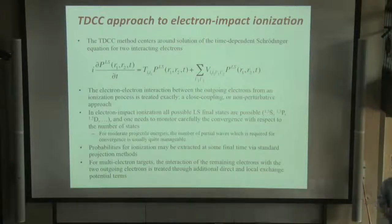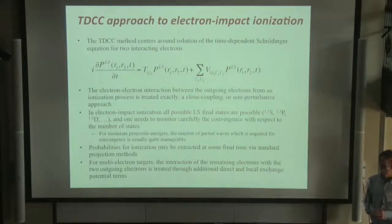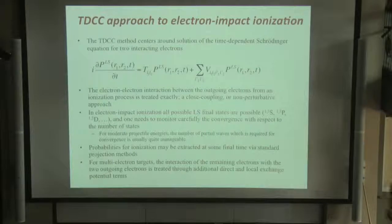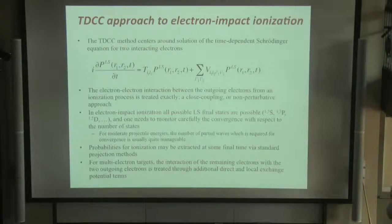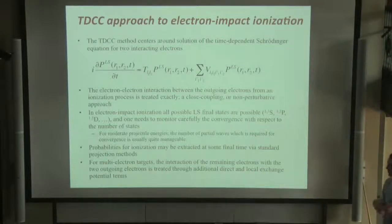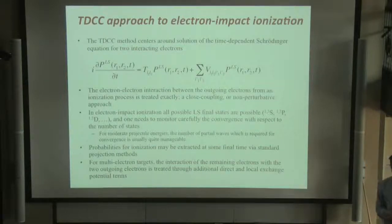So the electron-electron interaction is treated exactly. In a pure one-electron target such as atomic hydrogen, this should be something of an exact calculation within the numerics. For electron-impact ionization, one computes and propagates these equations for all the LS terms needed to converge, and monitors carefully the convergence with the number of states. After some high angular momentum terms, this should hopefully converge and give a scattering probability that can be converted into a cross-section.